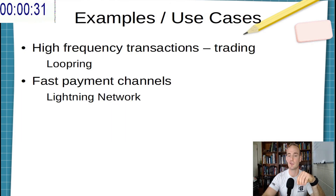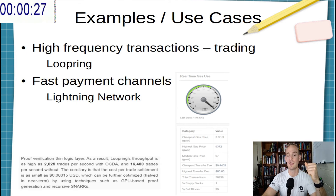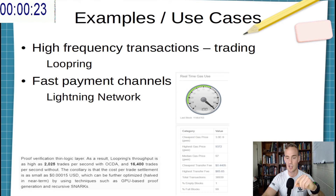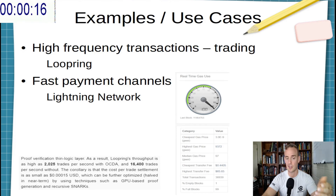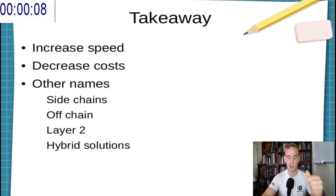Some examples of this would be the Loopring exchange for Ethereum-based tokens, or the Bitcoin Lightning Network. Just to drive home the advantage, you can see here that the average transaction fee — the cheapest transaction fee right now on ETH Gas Station — is about $0.44. But with the Loopring exchange, we can settle that for fractions of a cent in just a fraction of a second.